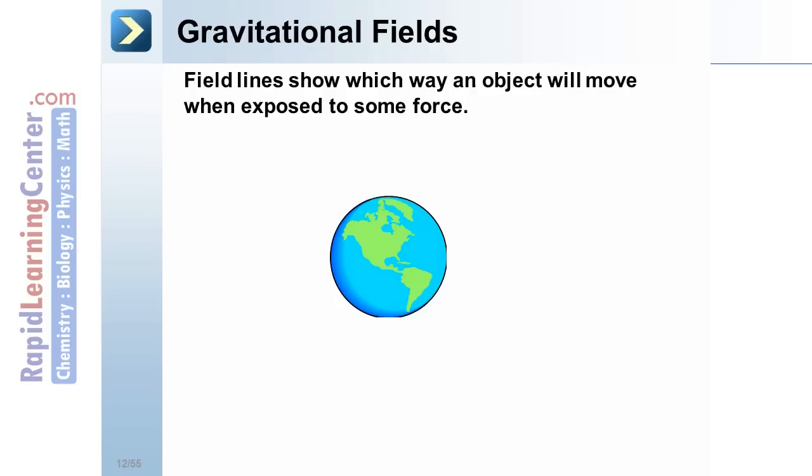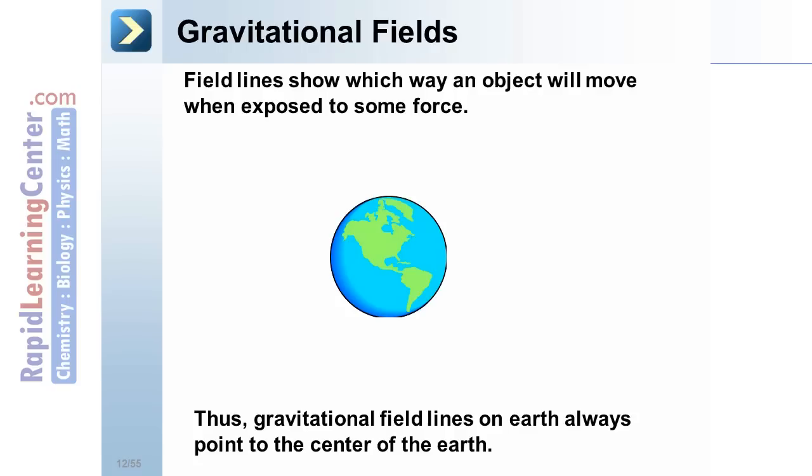Gravitational Fields. Any field lines show the direction of a force. In the case of gravitational fields on Earth, those field lines point towards the Earth. I'm sure you realize that objects fall, accelerate, or are pushed towards the Earth. Thus, all of the gravitational field lines surrounding the Earth would be pointing directly towards it.